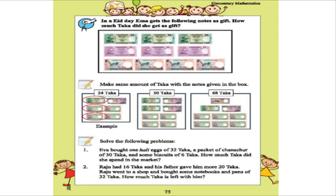Before solving question number 1, I will read the question. In the first line, the author has written: Eva bought one hali of eggs for 32 taka, a packet of chanasur for 30 taka, and some biscuits for 6 taka. The question is: how much taka did she spend in the market?